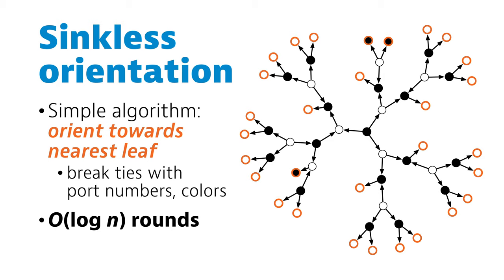Now, this problem is easy to solve in logarithmic time. Basically within logarithmic distance there has to be at least one leaf node. And if everyone points towards the nearest leaf node, we get a sinkless orientation.